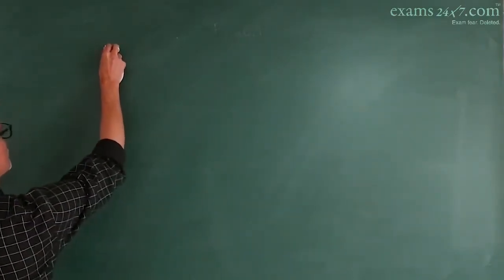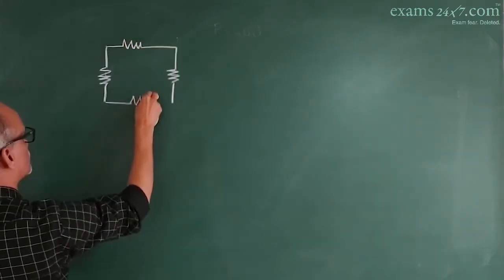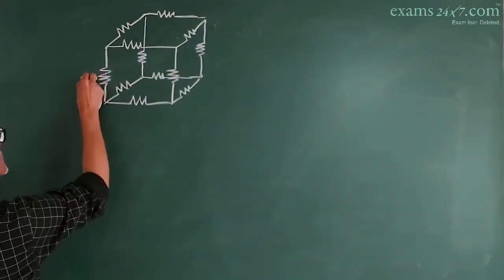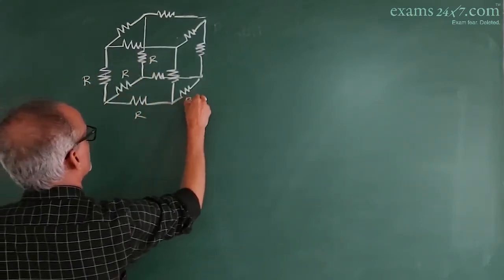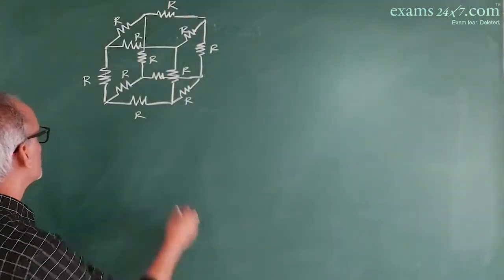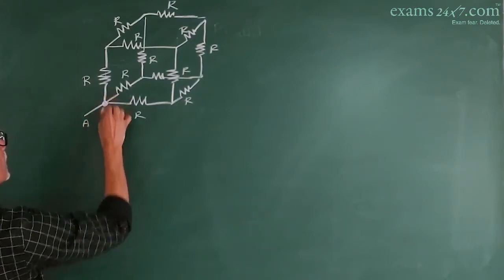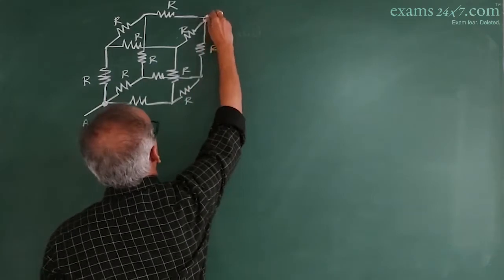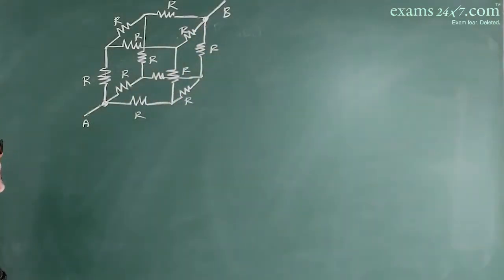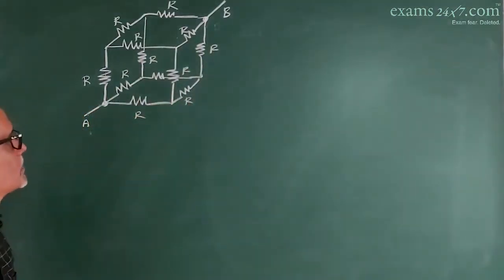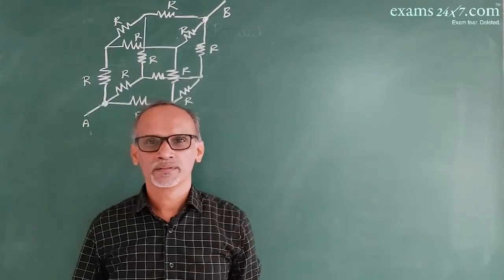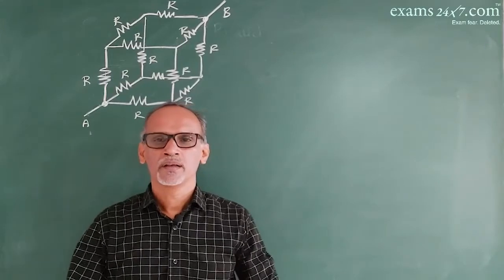Now let us consider a particular combination where 12 identical resistors, each having resistance R, are joined to form a cube. We need to find the effective resistance between corner A and the exactly opposite corner B. One method to solve this is the nodal method — identifying the nodes by numbering them and then rearranging the circuit.